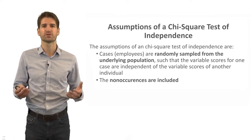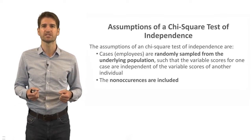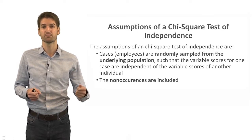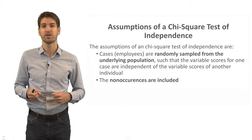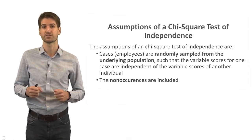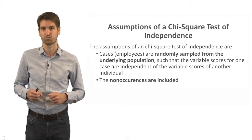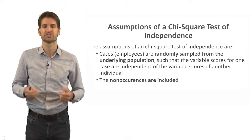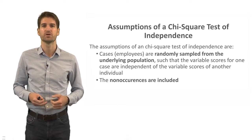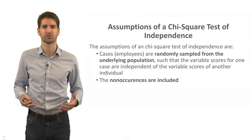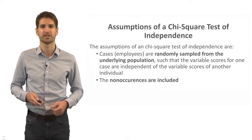The second assumption is that we need to include what are called non-occurrences. For example, if you're counting the number of people who quit who were in the new training program versus the old training program, you would also want to include those non-occurrences — those people who stayed. This way we fill out the two-by-two Chi-Square contingency table, which I'll show you shortly.